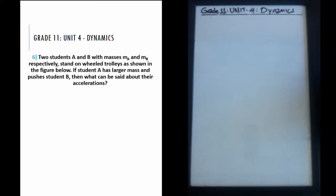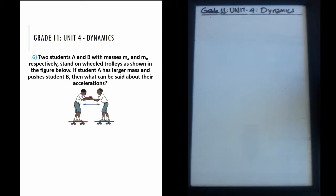Question number six says: two students A and B, with masses mA and mB respectively, stand on wheeled trolleys as shown in the figure. If student A has a larger mass and pushes student B, what can be said about their acceleration? This comes with a figure showing two students on trolleys.